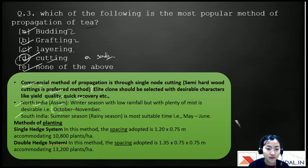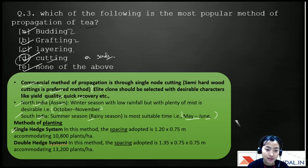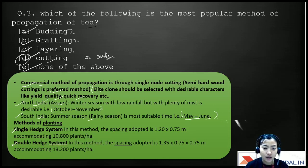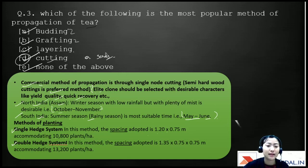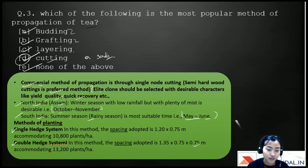There are two methods of planting for tea: single hedge system and double hedge system. In the single hedge system, the spacing is 1.2 × 0.75 meters, accommodating 10,800 plants per hectare. In the double hedge system, the spacing is 1.35 × 0.75 × 0.75 × 0.75 meters, accommodating about 13,200 plants per hectare.